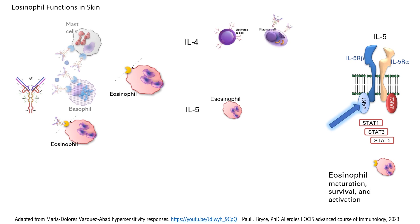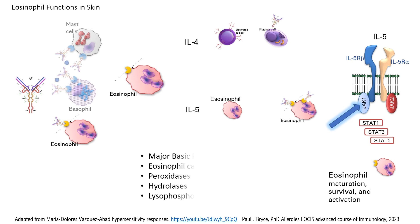Interleukin-4 will also produce maturation of the B cells with production of IgE that stimulates the eosinophil. So both the contemporary and the traditional theories will have different ways of stimulating eosinophils. This produces the maturation, survival, and activation of the eosinophils, but also the degranulation of these eosinophils.